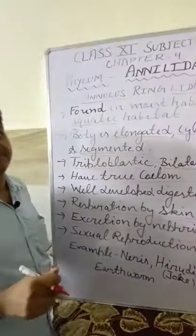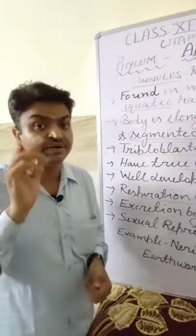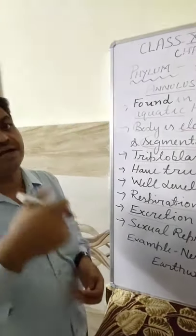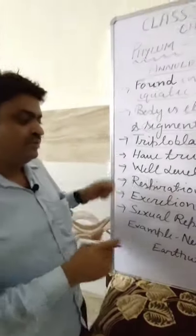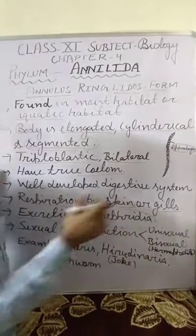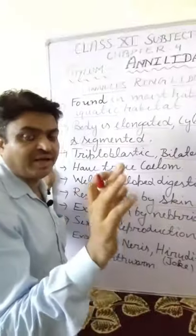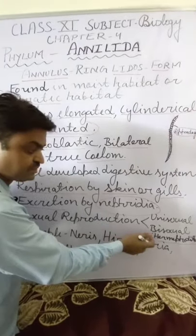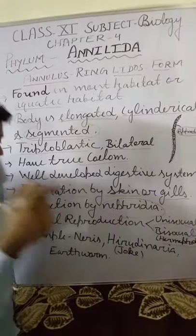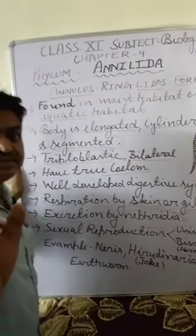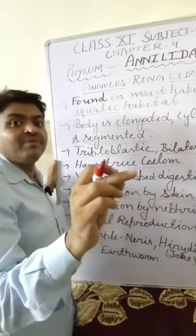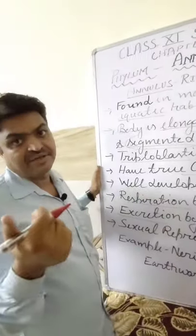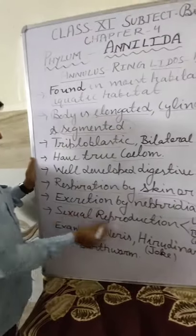They have sexual reproduction. They have both types — they are unisexual or bisexual. If they are bisexual, it means the male and female reproductive organs are found in the same organism; those are known as hermaphrodite animals. Like the earthworm — earthworm is an example of bisexual animals where male and female reproductive organs are found in the same animal. That's why they are bisexual in nature and have sexual mode of reproduction.